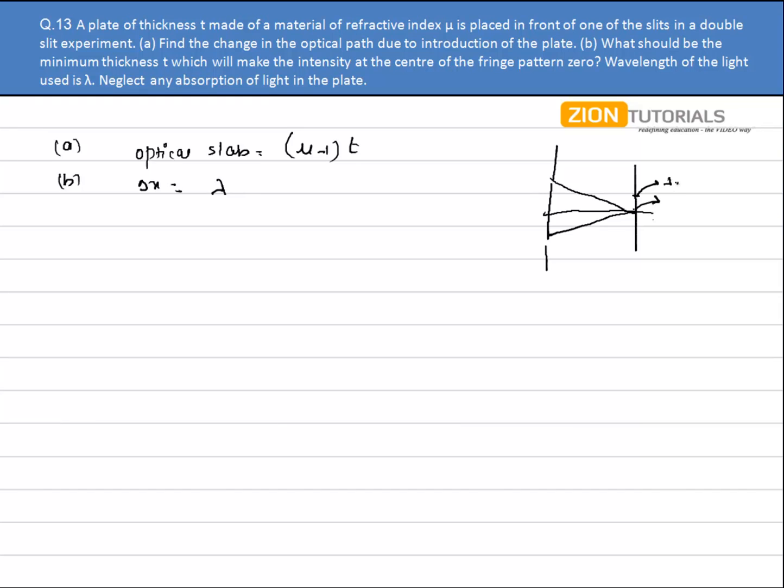Here the path difference is lambda by 2. Even here that is at the first minima after the central maxima, they are having a path difference of lambda by 2. So if I create a path difference of lambda by 2 at the center, then I'll get what I require. That is, I'll get the intensity at the center to be zero.